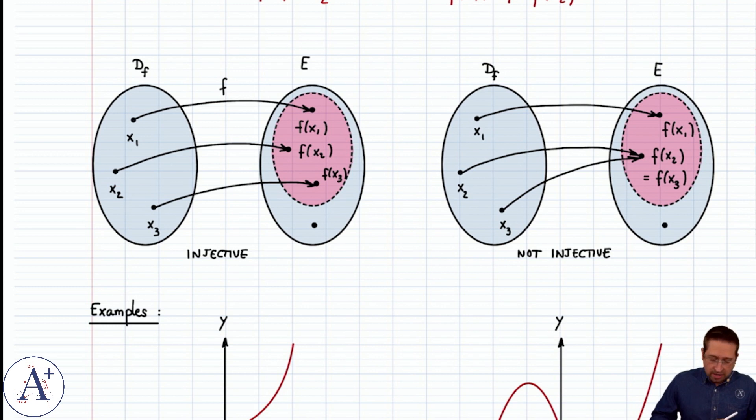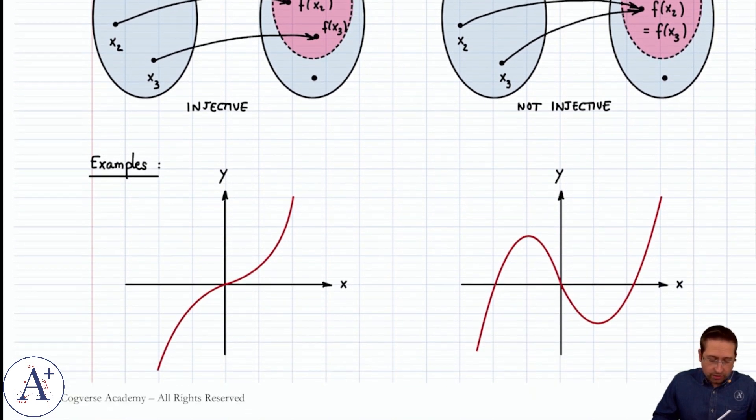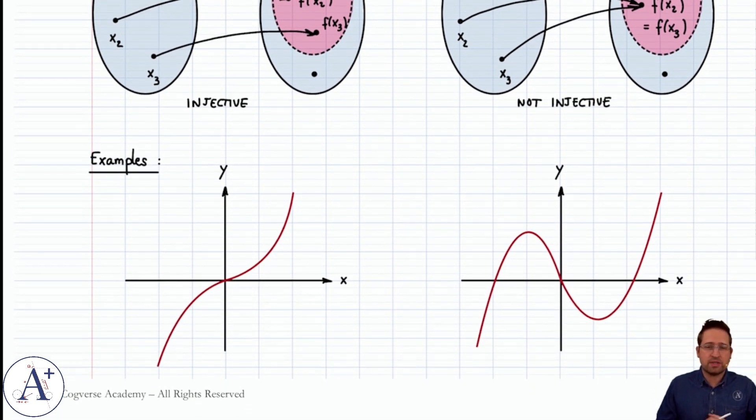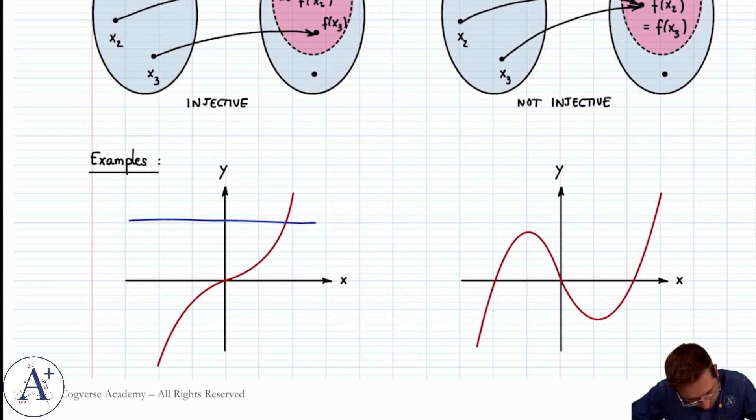Now graphically, it turns out you can recognize an injective function pretty easily, because it's going to satisfy the horizontal line test. In other words, similar to the vertical line test, which of course it has to satisfy because it's a function, but now we have the horizontal line test, which is that if you draw a horizontal line, it cannot intersect more than once with the graph of the function.